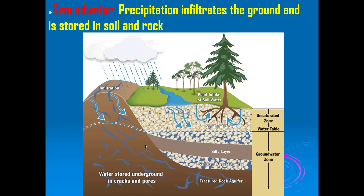The water table is the level at which you start finding water, and it's at different levels in different places. In some places it's right up against the bottom of the soil; in others you can dig for a mile before hitting water. Humans can affect the water table — if you take out more water from groundwater sources than replenishes, you have to keep digging deeper to find it. The groundwater zone is also called the saturated zone; above it is the unsaturated zone.